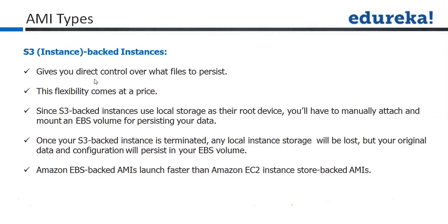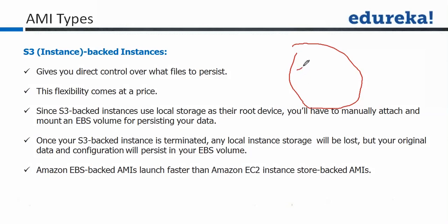The second model is the Instance Store-backed AMI. People popularly call it S3-backed, but Amazon calls it Instance Store-backed AMI. When you launch an instance with this type, it would have by default 1 GB, 1 TB, 2 TB, or some 500 GB of storage attached — and all of that is ephemeral storage. As long as the instance is running the storage is there, but as soon as the instance is terminated all your data would be lost.